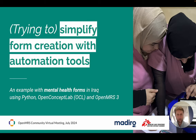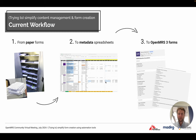Hi everyone. So lately we've been trying to simplify and automate a few tasks in content management and form creation using small Python scripts. Our current workflow when we digitalize paper forms to open industry forms is that we'll take all the questions, the answers, the skip logic, and then put everything into metadata spreadsheets in Excel.